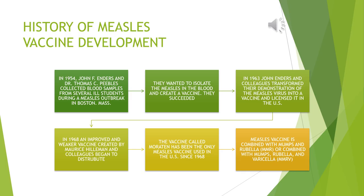History of measles vaccine development. In 1954, John F. Enders and Dr. Thomas C. Peebles collected blood samples from several ill students during a measles outbreak in Boston. They wanted to isolate the measles virus in the blood and create a vaccine. They succeeded, and in 1963, John Enders and colleagues transformed the measles virus into a licensed vaccine in the United States.